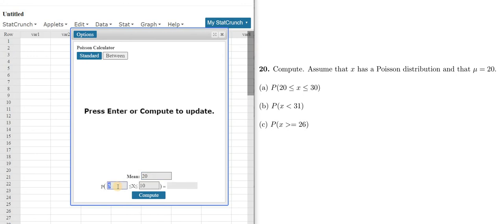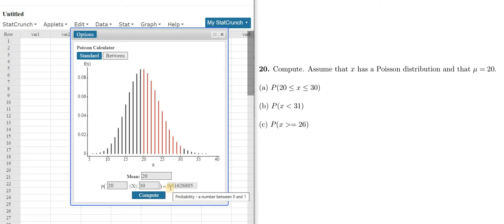And we have to enter the values. So 20 and 30. Just make sure it looks OK. So we clicked on between. We entered the mean of 20. So that's over here on the right. We entered the 20 and the 30. Everything looks good. Click Compute. And there is the answer, 0.5163. So the answer to part A is 0.5613.